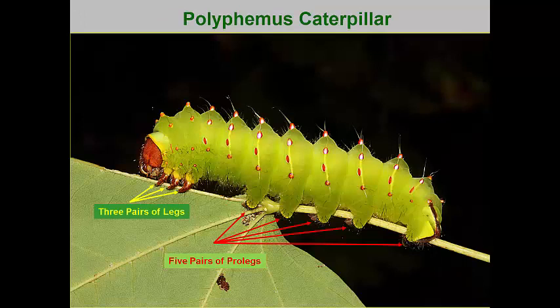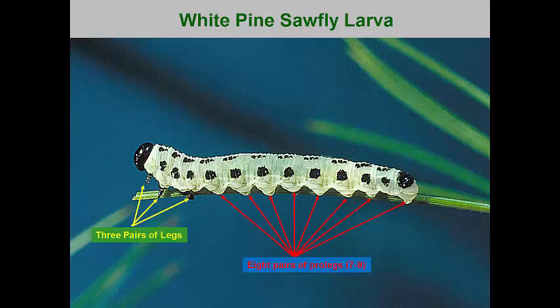As a quick review, remember that caterpillars have three thoracic legs and five or fewer prolegs. Most have the full complement of five prolegs, but some have two or three pairs of prolegs. Those are the loopers — the ones that adopt that looping or inchworm pattern of movement. On the other hand, sawfly larvae have more than five pairs of prolegs, usually seven to nine pairs.